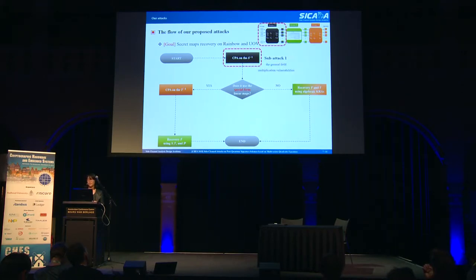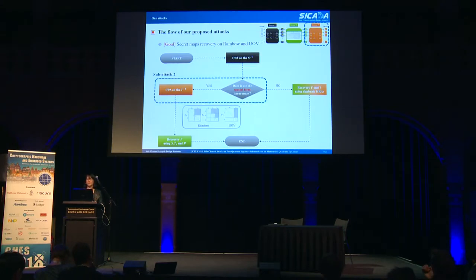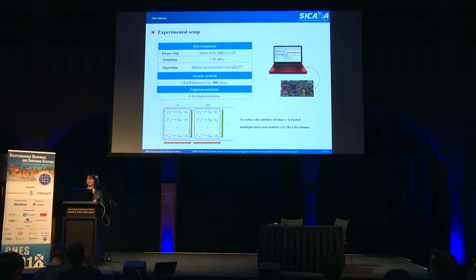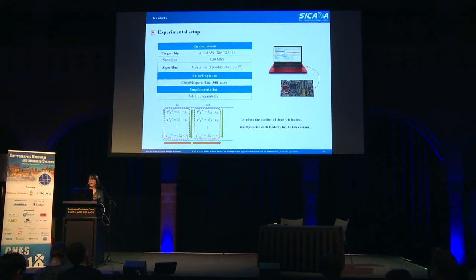The first sub-attack exploits general field multiplication vulnerabilities. The second one is used when the linear map T has the chess form; this attack can be used for UOV as well as for Rainbow. The last one is used for Rainbow with a random linear map T after S has been recovered. We implemented the matrix-vector product over GF(2^8) and performed experiments with ChipWhisperer, which is developed for side-channel analysis. Power traces were collected using 500 random messages.